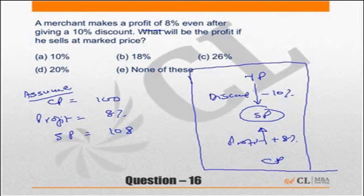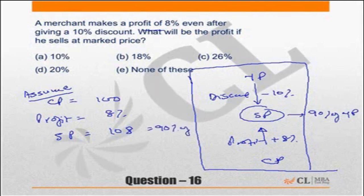A discount of 10% means the selling price is 90% of the mark price. So 90% of mark price equals 108, which means mark price equals 108 divided by 0.9, which is 120.